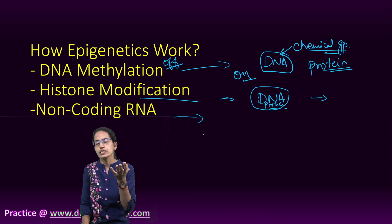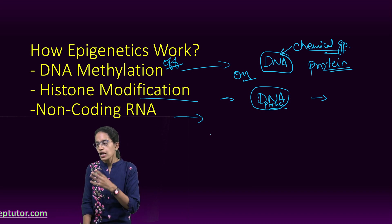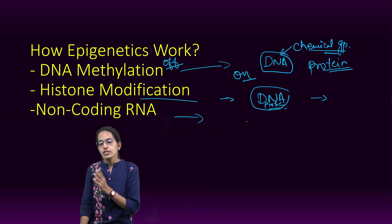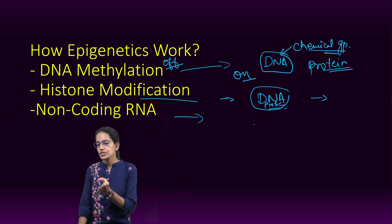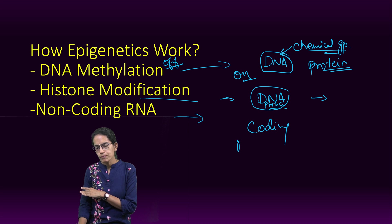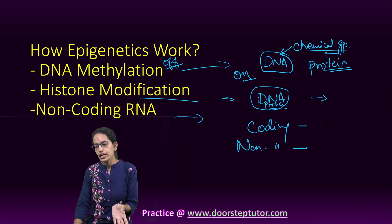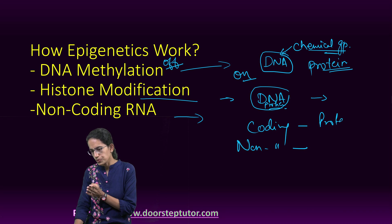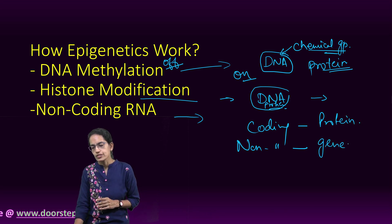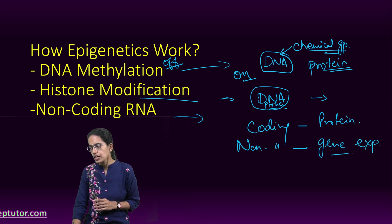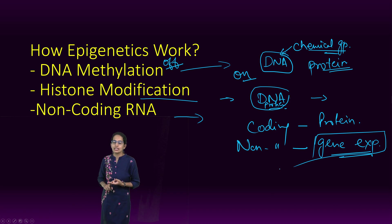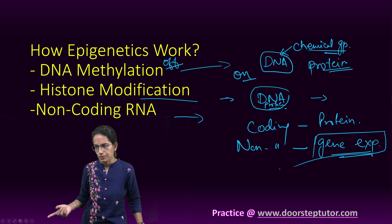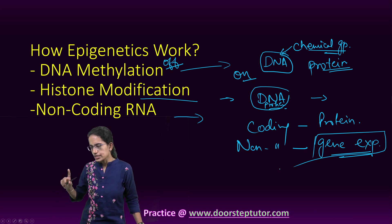The third mechanism is non-coding RNA. DNA provides instructions for making both coding and non-coding RNA. Coding RNA makes proteins, while non-coding RNA helps in the expression of the gene. When non-coding RNA influences gene expression, the turning on and off of genes affects the genetic makeup — making it a key epigenetic mechanism.